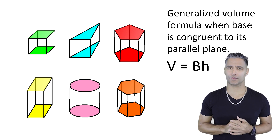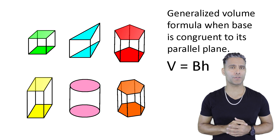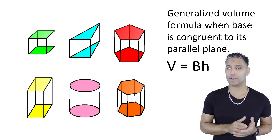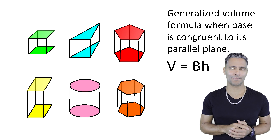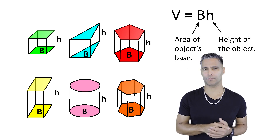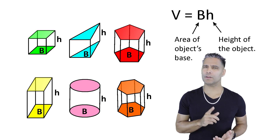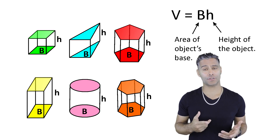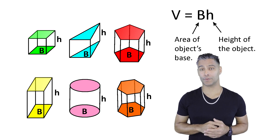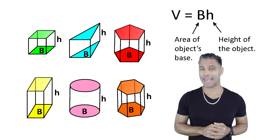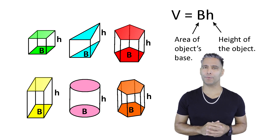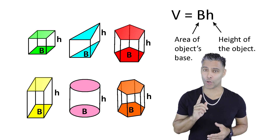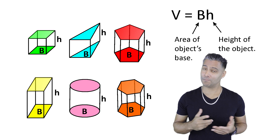Taking a look at the objects on the screen, we should notice that the top and bottom surfaces are congruent to each other. With objects such as these, we can always find the volume by finding the area of that object's base and then multiplying by that object's height. Five out of the six objects shown are different types of prisms. Technically, the cylinder is not a prism, but its volume can be calculated in the same way — find the area of the circular base and multiply that result by the cylinder's height. A generalized formula to find the volume of any of these objects is V = BH, where capital B represents the area of that object's base, multiplied by the height of that object. As long as you know how to find the area of that object's base, you can find the volume of that object.